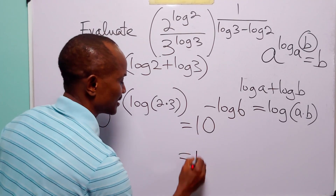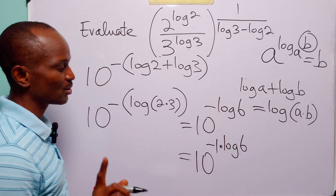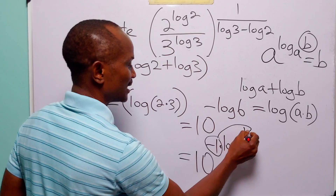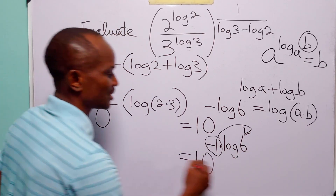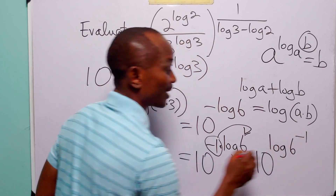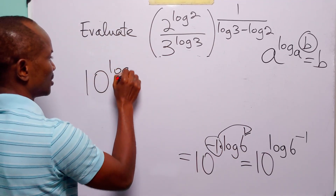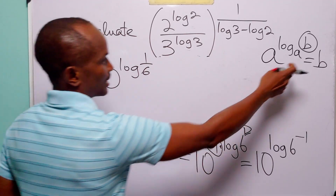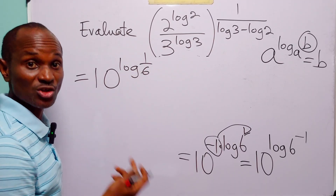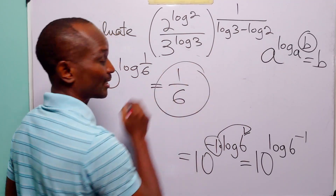This exponent is exactly the same thing as 10 to the power minus 1 multiplied by log 6. We apply the power rule of logarithms, taking the minus 1 up to become the power of 6, giving 10 to the power log (6 to the power minus 1), which equals 10 to the power log (1 over 6). Going back to our identity, 10 to the power log base 10 of (1 over 6) equals 1 over 6. So the value of this expression is 1 over 6.